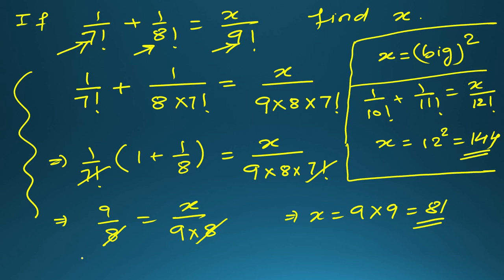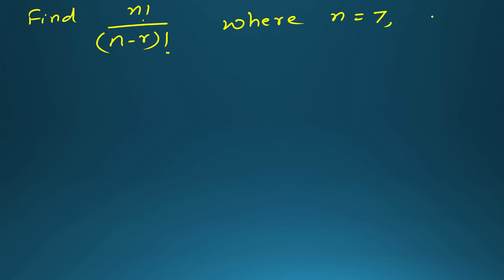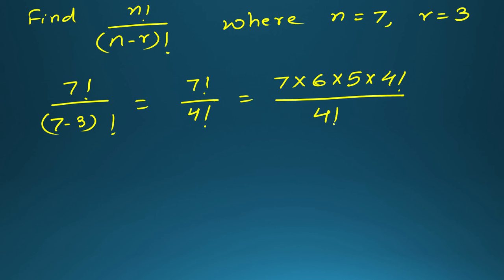Another common NCERT question: find n! ÷ (n−r)! where n = 7 and r = 3. This becomes 7! ÷ 4! = (7 × 6 × 5 × 4!) ÷ 4!. The 4! cancels, leaving 7 × 6 × 5 = 210. This is the answer.